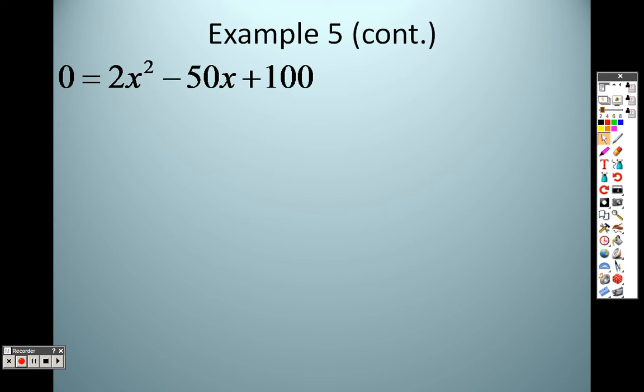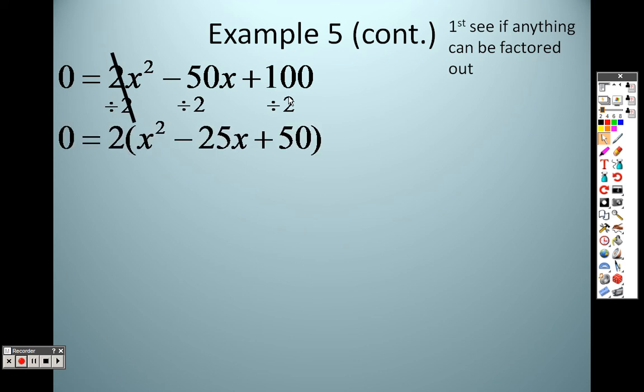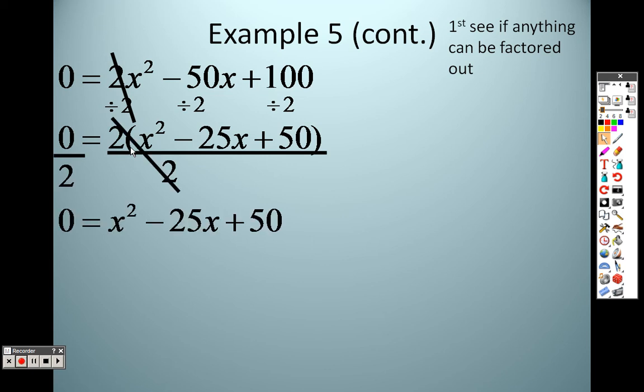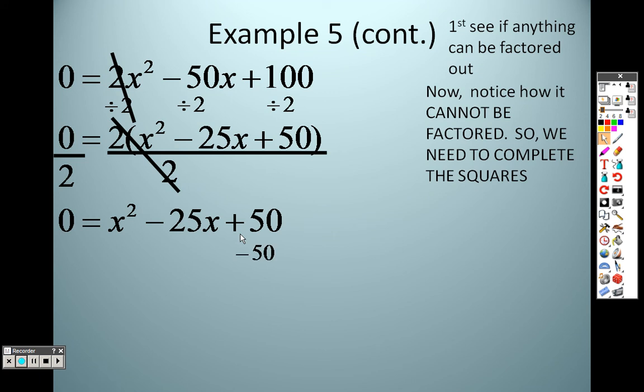Even if I wanted to factor, even if I wanted to complete the squares, before I do anything, let's take out what they all have in common, and they all have one thing in common, that's a 2. They're all divisible by 2. To take a 2 out of everything, I have a negative 25 now and a 50. I can divide both sides by 2 to get rid of it, and this is actually what I have left. Can you think of two numbers that multiply to give you 50 that add to give you negative 25? Not off the top of my head, so here's what I'm going to do.